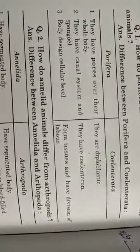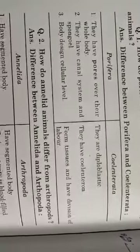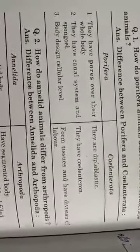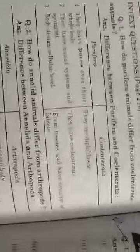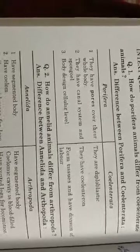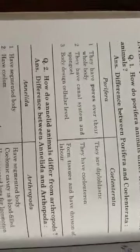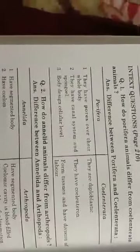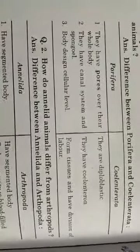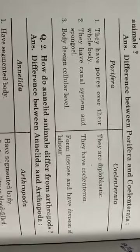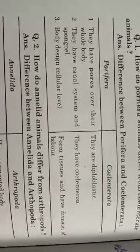Porifera have pores over their whole body. Both Porifera and Coelenterata are diploblastic. Porifera have a canal system — these are sponges. Coelenterata body design is at the cellular level.